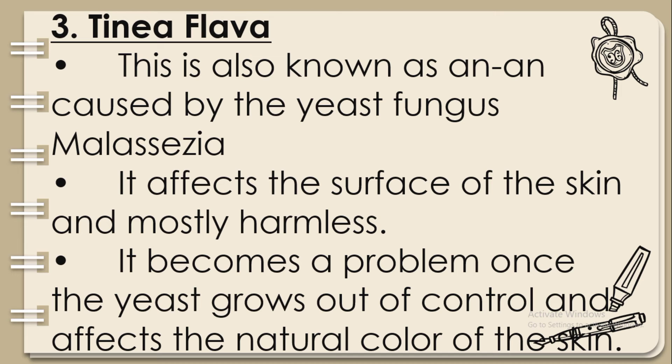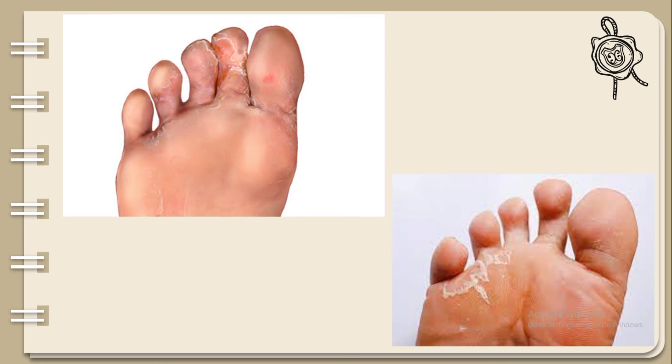Number three: Tinea versicolor, also known as an en, is caused by the yeast fungus Malassezia. It affects the surface of the skin and is mostly harmless. It becomes a problem once the yeast grows out of control and affects the natural color of the skin.